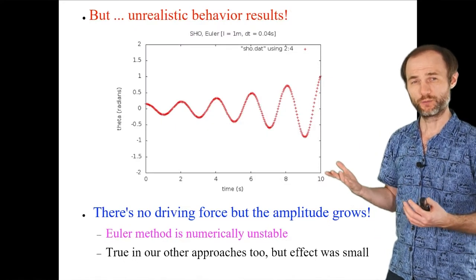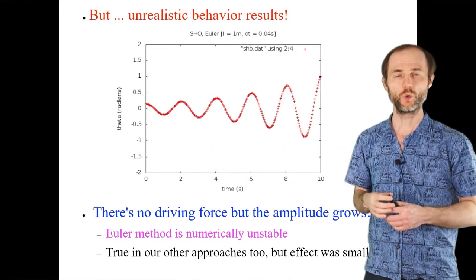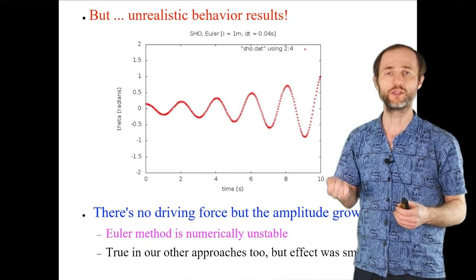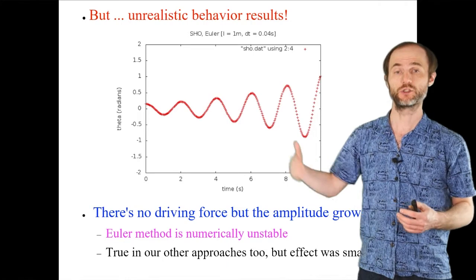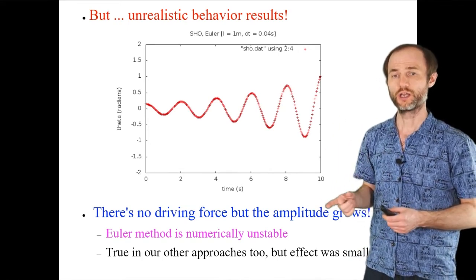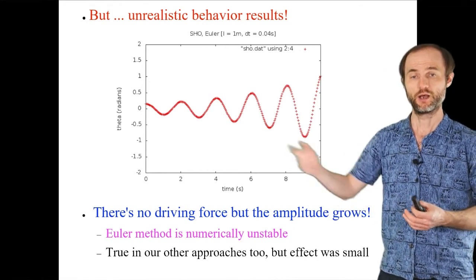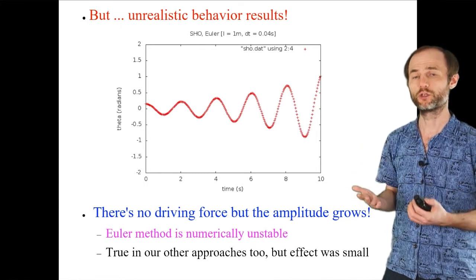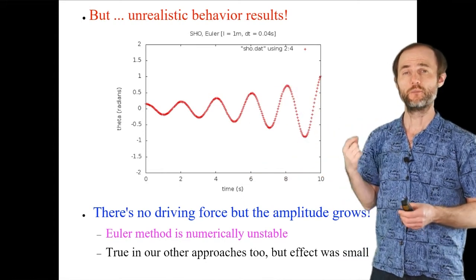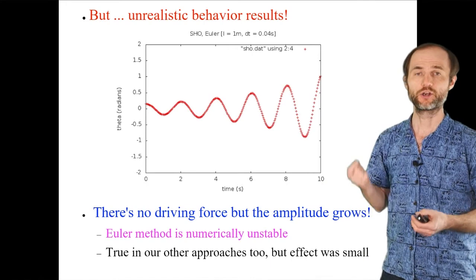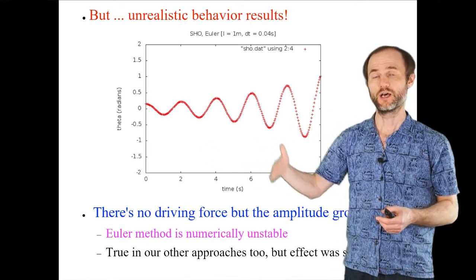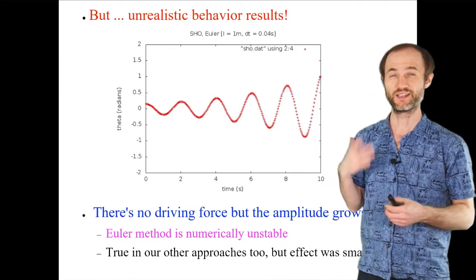When we look at the result, it behaves in a really weird way — the magnitude of oscillation keeps increasing in time, which is unphysical. We know the simple harmonic oscillator solution is a sinusoid with constant amplitude. Nothing is pumping energy into the system, so this indicates the Euler method is actually unstable. It was always unstable even for projectiles, but for short integrations the error didn't accumulate much. Here, because the system is periodic and must return to the same place, the growing error is accentuated.